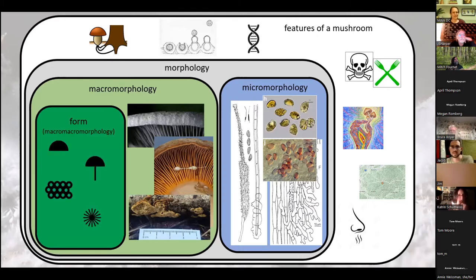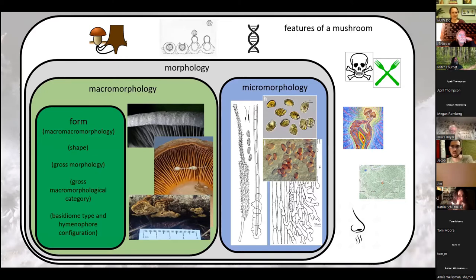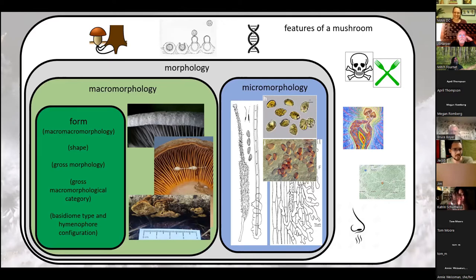So again, does it have a cap? Does it have a stem? Does it have pores or gills? A lot of words and phrases have been used for it. Shape is great. Gross morphology is okay. Gross macromorphological category is a phrase I actually used in a real paper that got published, and it's really ugly.